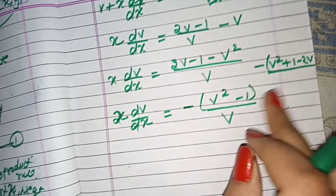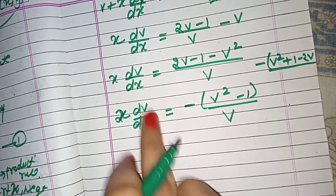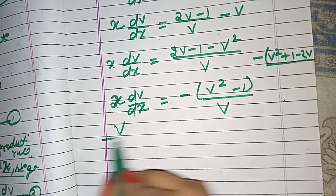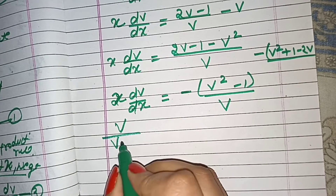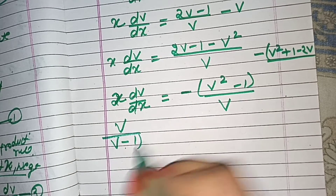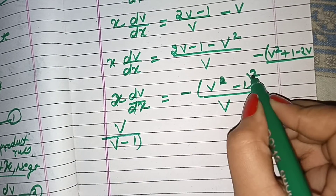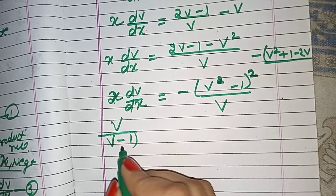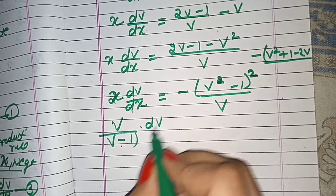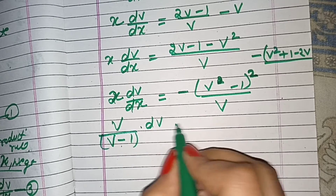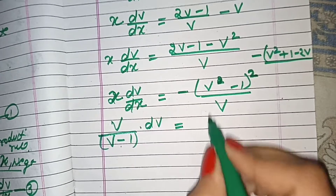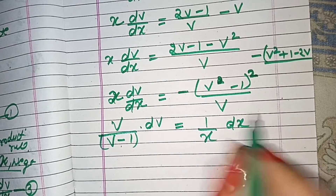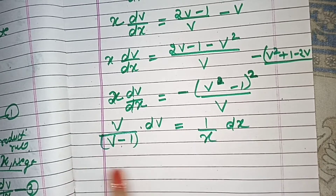Now what do we do with this? Variable separation. Where dv is, the v variables go to that side. So we separate: v dv over (v minus 1)² equals minus dx over x. Note that v² minus 1 here means (v minus 1)², so v divided by (v minus 1)² dv equals minus dx over x.